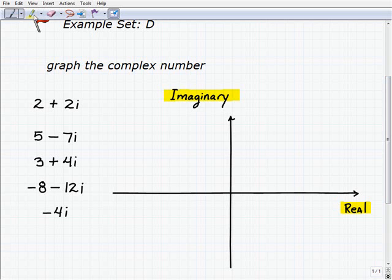It's the real number axis, which is this one right here. And then, of course, we have the imaginary number axis, this one right here.